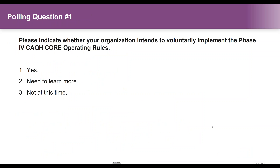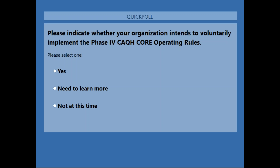It's great to see how the operating rules and certification together are helping a company like Eligible. This brings us to our first polling question of the webinar. The question asks: please indicate whether your organization intends to voluntarily implement the Phase 4 CAQH Core Operating Rules. I will launch this poll, and you will see it appear right on your screen. We'll pause for just a couple of seconds for everyone to respond — this helps us take a pulse of the audience.